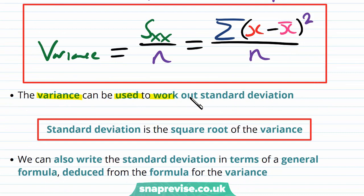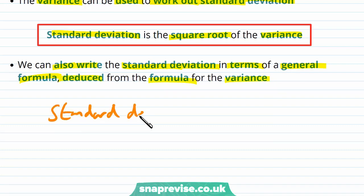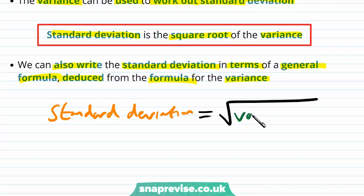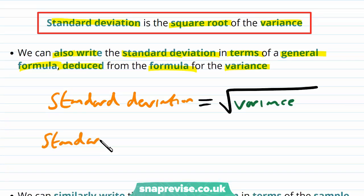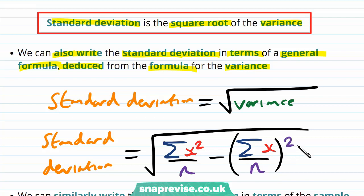The variance can be used to work out the standard deviation. Standard deviation is the square root of the variance. We can write the standard deviation in terms of a general formula: sigma equals the square root of the sum of X squared over n, minus the sum of X over n all squared. All we have done is take the formula for variance — the mean of the squares minus the square of the mean — and take the square root.